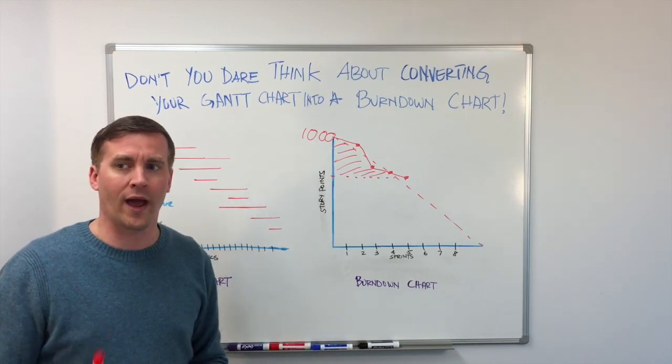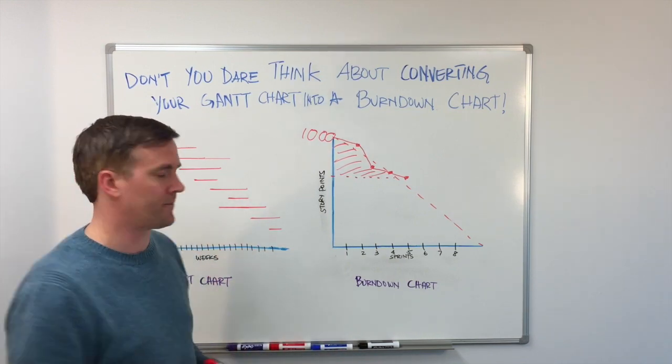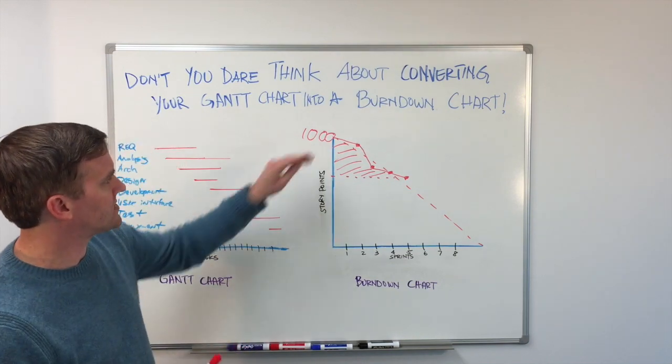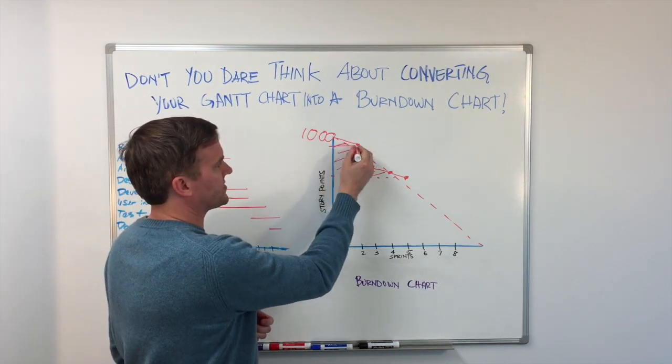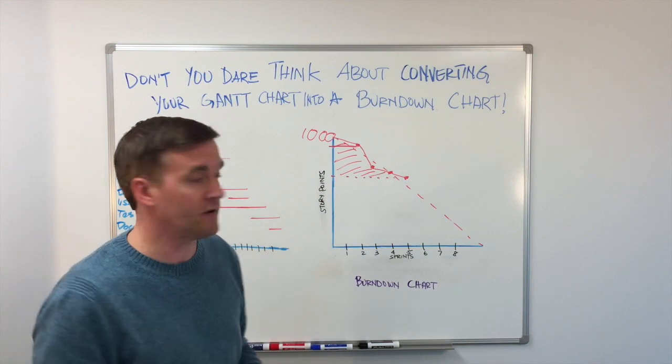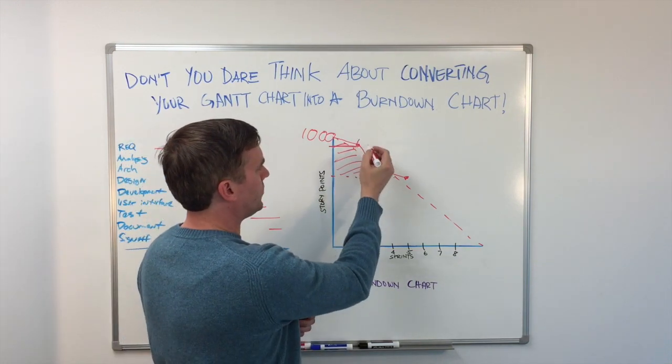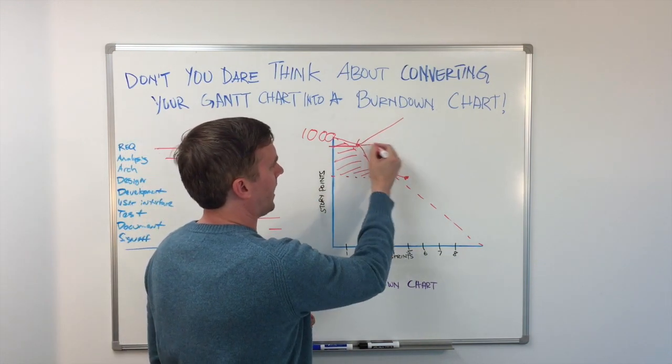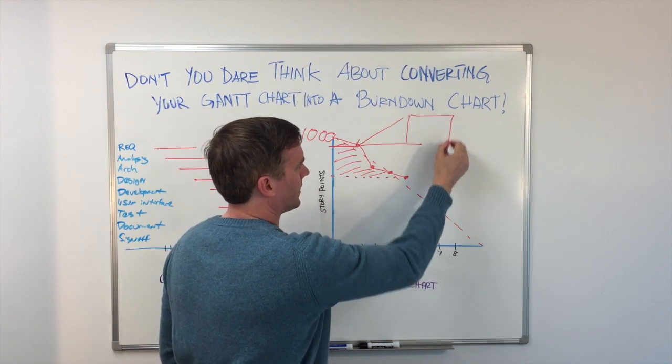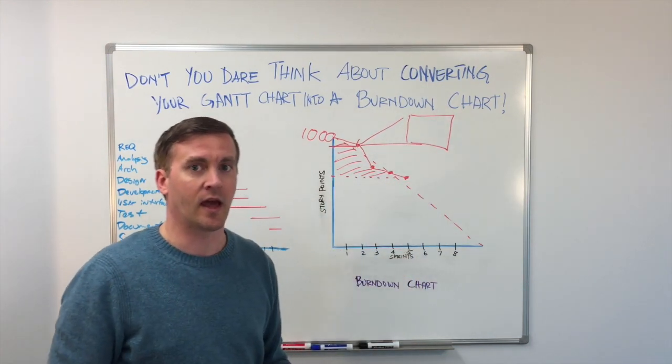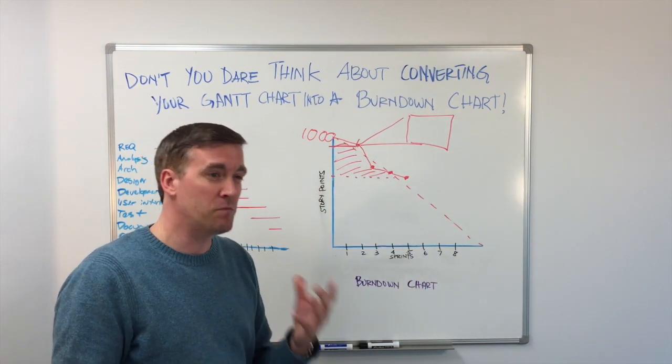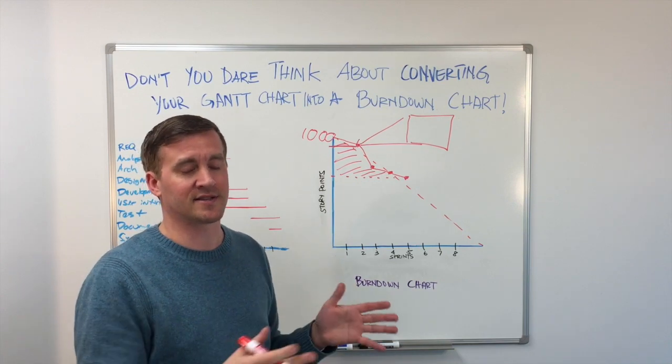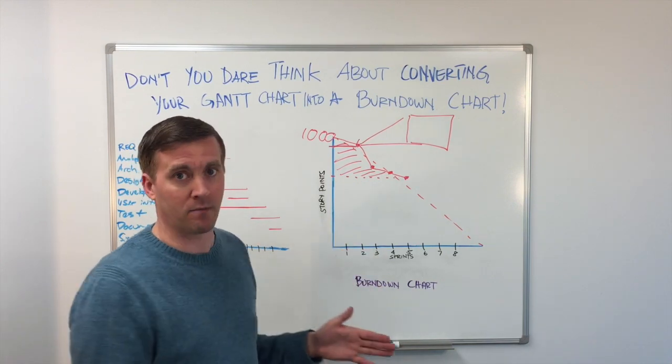Now there is one way where you can make the two work together, and that would be if you consider each one of these sprints a miniature project in and of itself. So this little tiny two-week chunk of work, if you expanded it out, could look something like a mini project. And in a mini project, you might have a linear set of steps that could map out much like a Gantt chart.